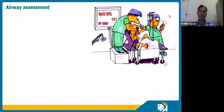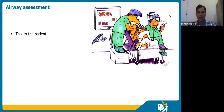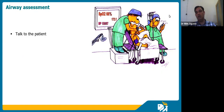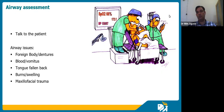Assessing the airway — just talk to the patient, ask their name or what happened. If they respond, the airway is patent. If not, assess further: check for foreign bodies, dentures fallen back, blood, vomitus, or if the GCS is below 8, the tongue may have fallen back. Burns, swelling, or trauma can also compromise the airway. If any of these are found, correct the airway first — before addressing other injuries like a limb fracture.